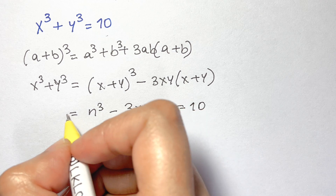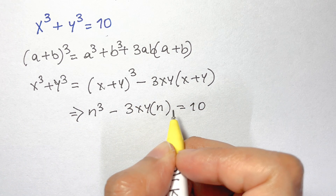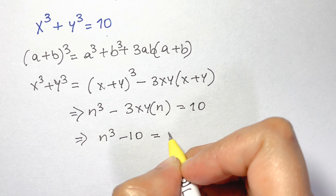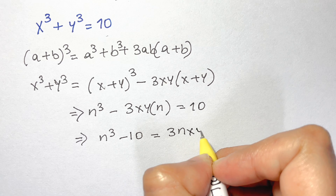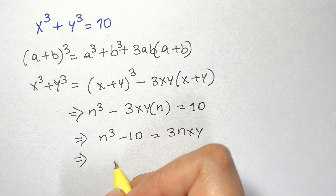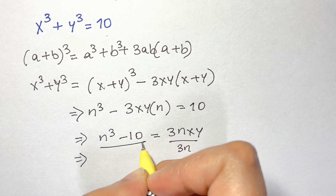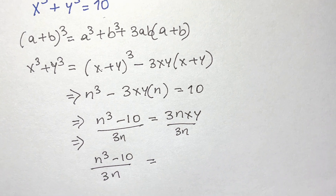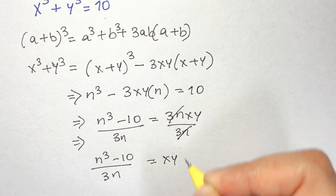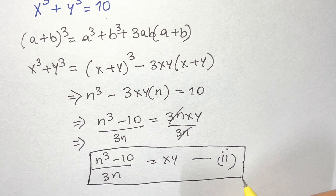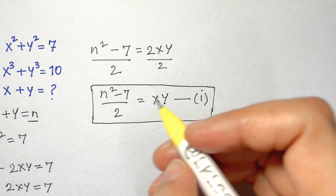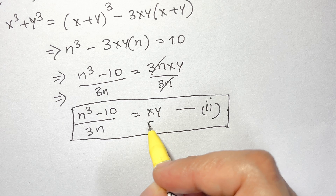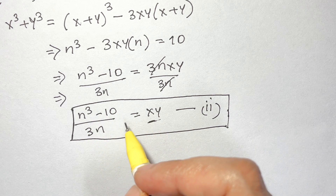Rearranging, n cubed minus 10 equals 3n times xy. Dividing both sides by 3n, we get xy equals n cubed minus 10 over 3n. Let this be equation 2.